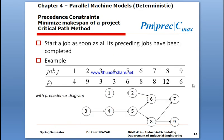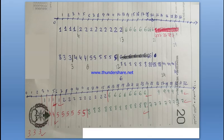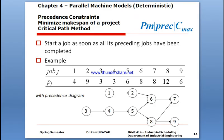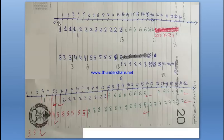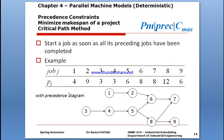We have nine jobs with given processing times and precedence requirements as shown. I put a time scale from zero up to around 240 units. We can have as many parallel machines working together at the same time, but we have to satisfy the precedence diagram. For example, step one and step three are parallel, and step two and step four are parallel, so they can be performed at the same time.